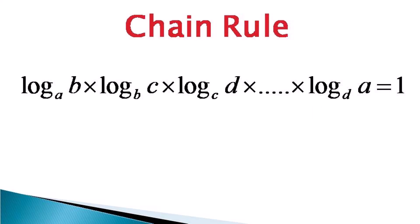Then comes the chain rule of logs. When logarithms with different bases are multiplied in the pattern: log of b to base a, times log of c to base b, times log of d to base c, and so on until the last log has the same number as the base of the first log — this patterned multiplication becomes equal to 1.